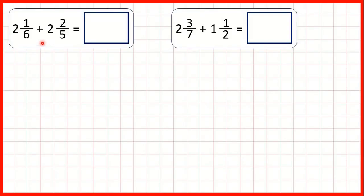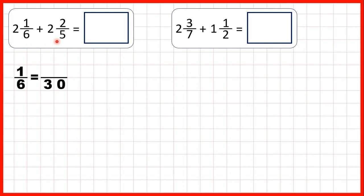For these questions we're adding mixed numbers. We have 2 and 1 sixth plus 2 and 2 fifths, but to add fractions we need the denominators to be the same. The lowest common multiple of 6 and 5 is 30, so we can find equivalent fractions for 1 sixth and 2 fifths which both have a denominator of 30.